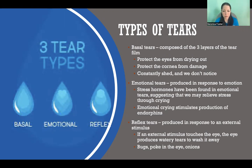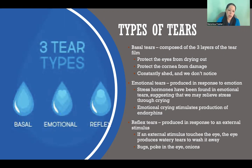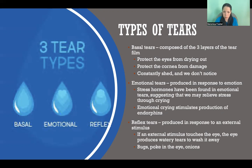Emotional tears are exactly what it sounds like — those are tears that we produce in response to emotion. Interestingly, if we study tears produced from emotional crying, they've actually found stress hormones present in those tears, which suggests that when we cry, we are releasing some of those stress hormones. It's an outlet to clear those hormones from our blood, which helps us get past that stressful event a little bit faster.